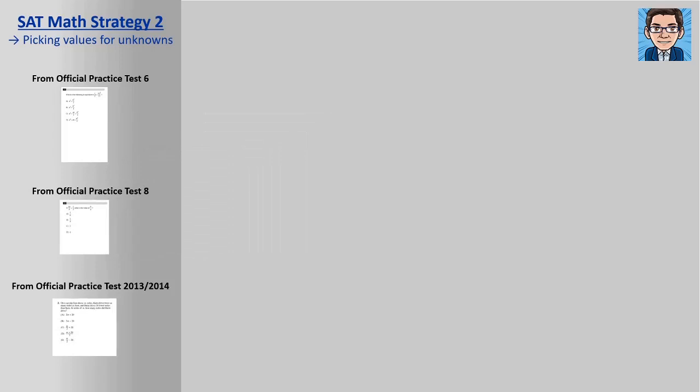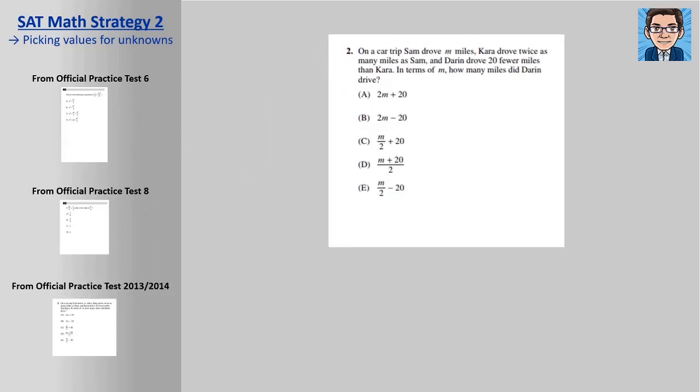Okay, and the last one we're going to take a look at here. We've got Sam driving a certain number of miles. Kara is driving twice as far as him, and Darren is doing 20 fewer miles. So we can just assume a number of miles. I'm going to say, let's say Sam did 100. 100 is a nice easy number to work with.